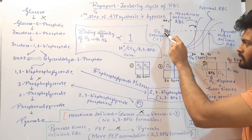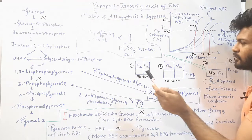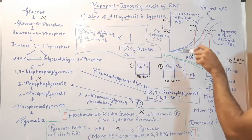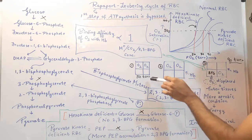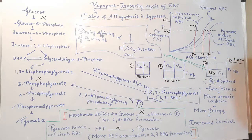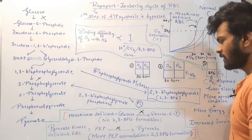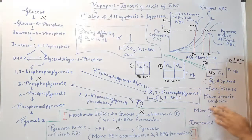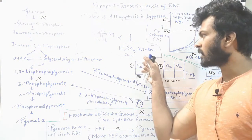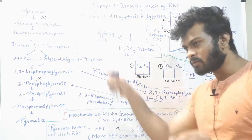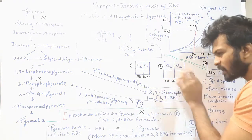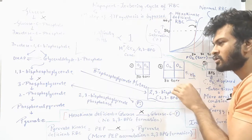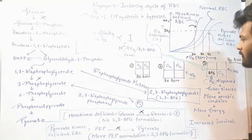At 50% saturation, we extrapolate on the x-axis and get approximately 50 torr for hexokinase-deficient RBC. For normal RBC (the middle curve), it's approximately 80 torr — because some 2,3-BPG is formed, so binding affinity decreases slightly, requiring more partial pressure. The 50, 80, and 90 values I've given are just random values for understanding purposes.